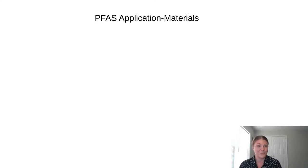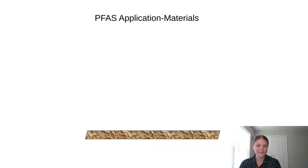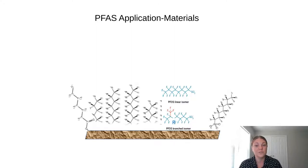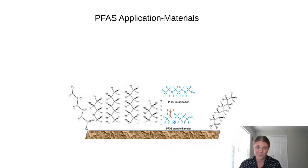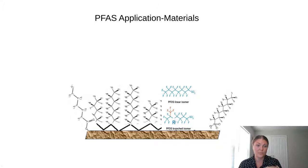Thinking first about our materials, I'll give you a graphic example of how PFAS interact with a surface. Imagine this material — it could be paper, textile, food contact material, or a waterproof jacket. As we discussed, the carbon-fluorine chain is hydrophobic and oleophobic — water and oil repellent, not wanting to interact with anything. So those carbon-fluorine tails stick straight up off the surface, with both linear and branched isomers potentially attached. The polar head group then binds to the material.